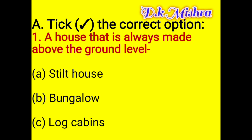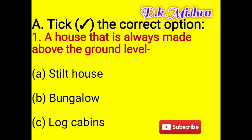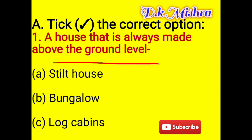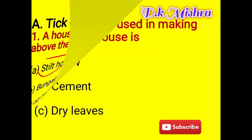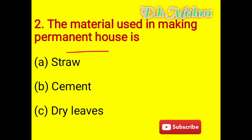First, tick the correct option. A house that is always made above the ground level — we have learned that the stilt house is made above the ground level. So the correct answer is the stilt house. Number two, the material used in making permanent houses.